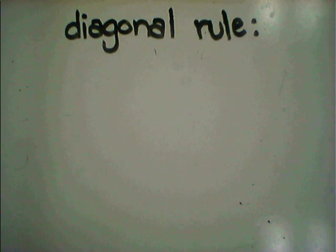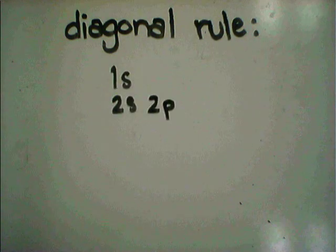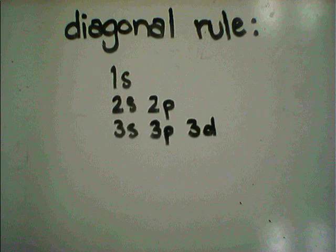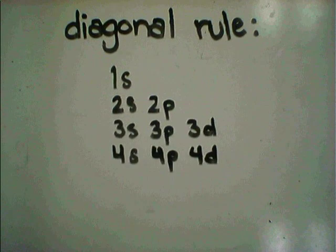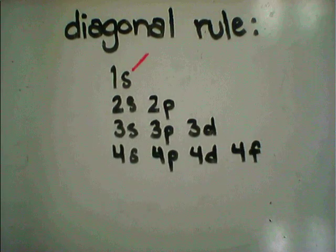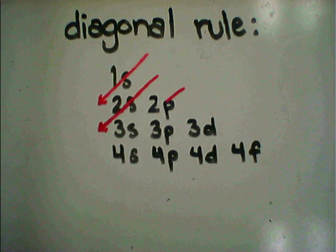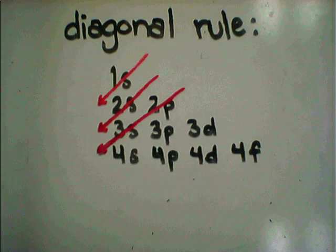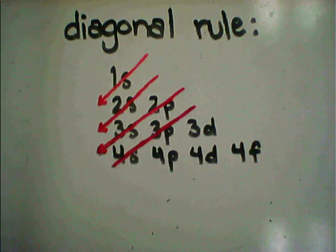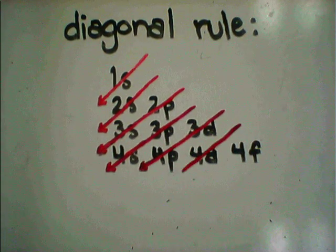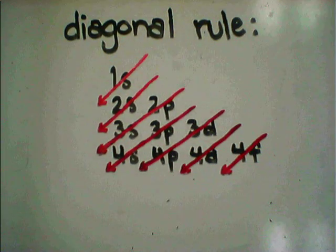One way to know how electrons fill up these energy levels is by the diagonal rule. This shows the lowest energy levels in an atom. Each higher level has one more sublevel than the previous. The red diagonal arrows show how the electrons fill the energy levels from the lowest to the highest — this is the reason it's called the diagonal rule.